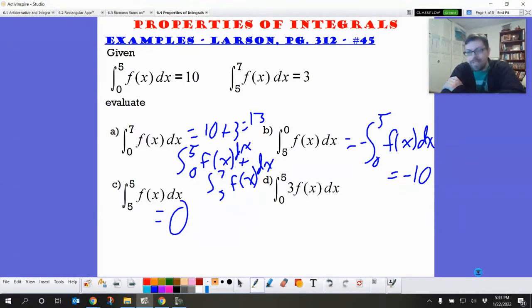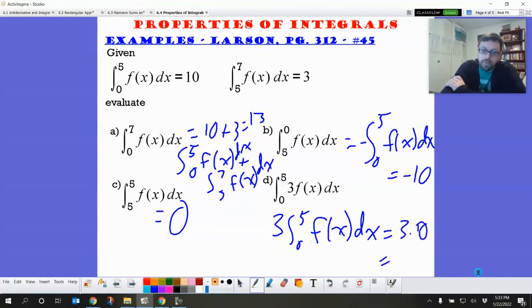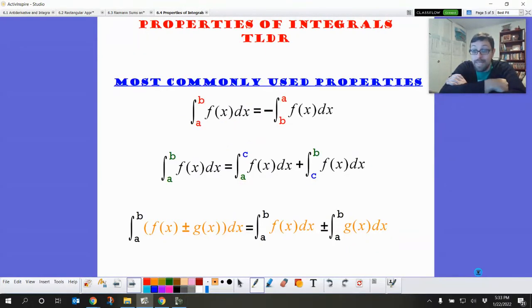From 0 to 5. But it's got a 3 in there. That's okay. We can pull that 3 out and go from 0 to 5 f of x dx. And just do 3 times 10, which is 30. Cool. And that's it. Nice and easy.